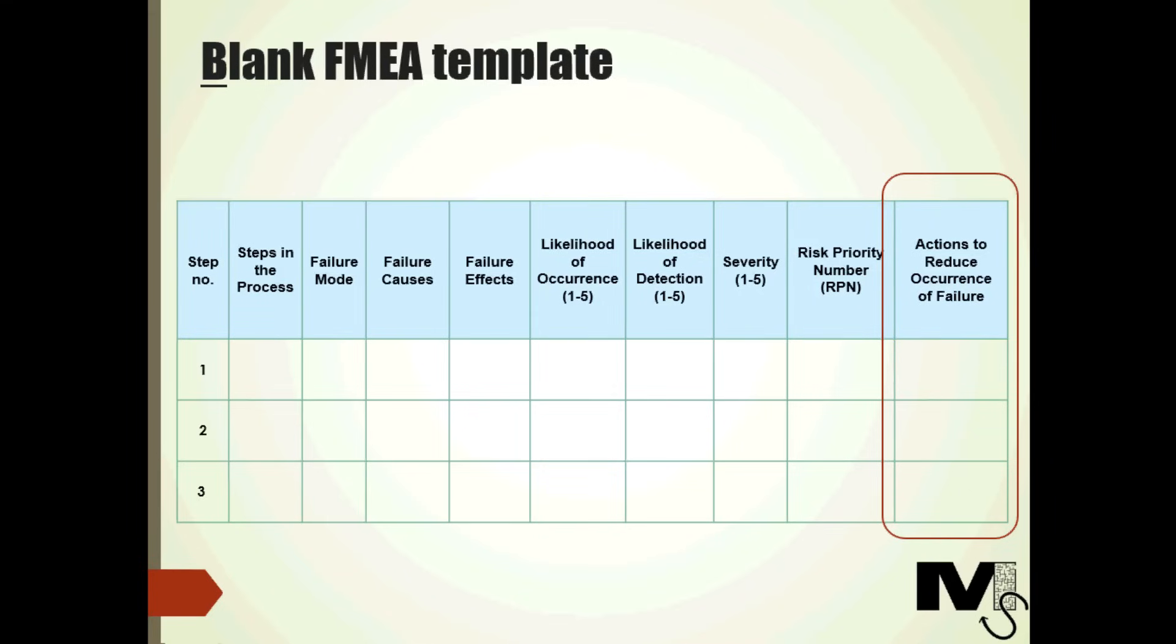The next columns deal with the possible actions to reduce the occurrence of failure and who would take the responsibility to correct or mitigate the situation. Now let's look at the steps in the FMEA process and then we look at an actual example to see it all in play.